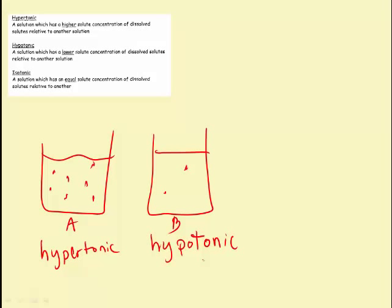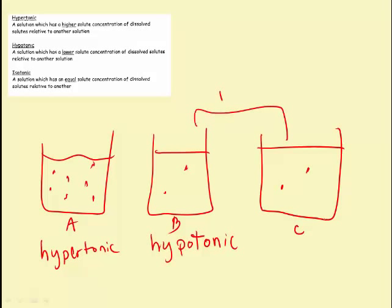These terms are comparative terms. If you use the term hypotonic or hypertonic in a sentence, you also have to use the word 'to' to show that you're comparing it to something. Now, if you have another solution — assuming these are all the same volume — we'll call this solution C. You can see that solution C has the same number of solutes dissolved into the water as solution B. So we would say that these two solutions are isotonic to each other, meaning that they have the same or equal solute concentration relative to one another.